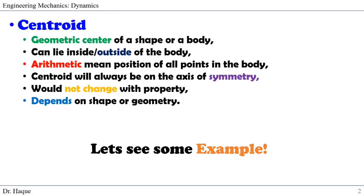So what is centroid? It is the geometric center of a shape or a body. It can lie inside or outside of the body. It is the arithmetic mean position of all points in the body. A centroid will always be on the axis of symmetry and would not change with property. Finally, it depends on the shape or geometry.